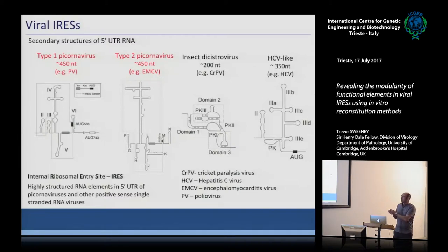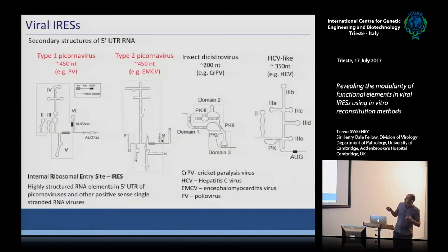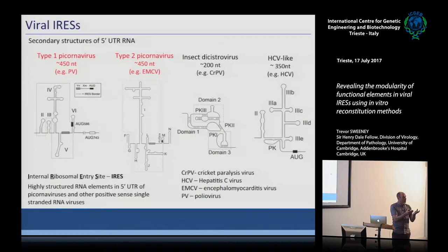The dicistrovirus IRES is a very simple piece of RNA structure that directly recruits the 40S ribosomal subunit, because it folds up in a way that mimics the tRNA that typically starts translation — exemplified by the cricket paralysis virus IRES. Then there's the hepatitis C virus-like family of IRESs, which recruit the large EIF3 subunit in order to recruit the ribosome directly.